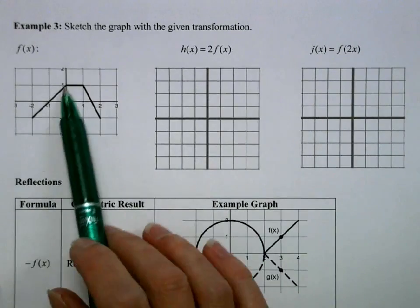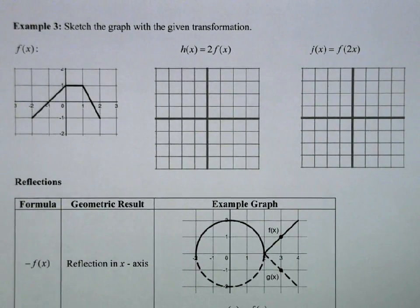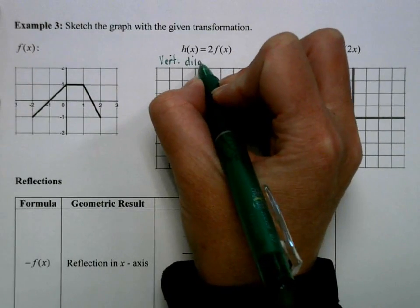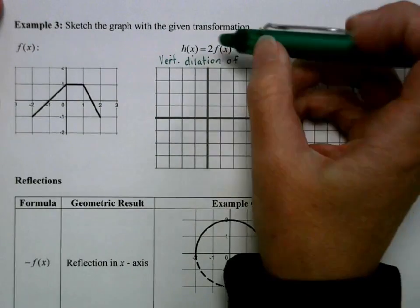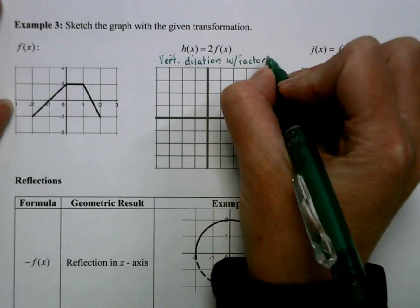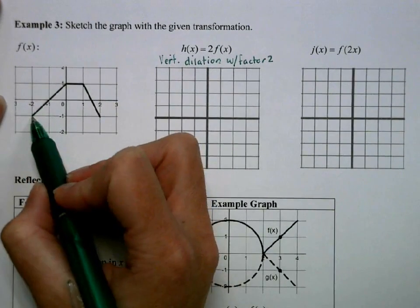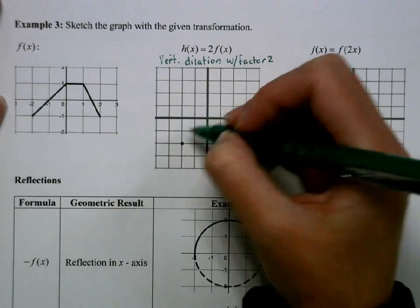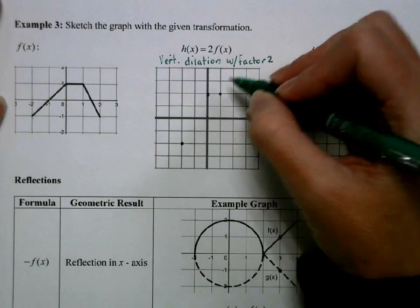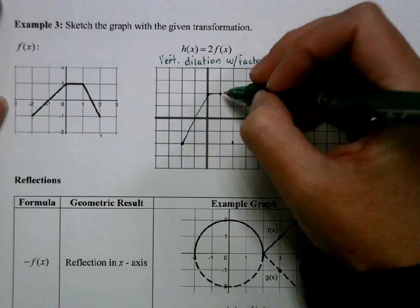I'm going to take the same piecewise graph and multiply the outside of the function by 2, which stretches the graph vertically — a vertical dilation with a factor of 2. Nothing changes horizontally, but the point at negative 2, negative 1 moves to negative 2, negative 2. The point at 0, 1 moves to 0, 2. The other points also get stretched, and we end up with a stretched-out version of our graph.